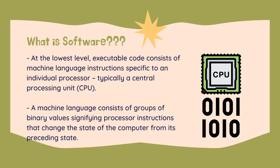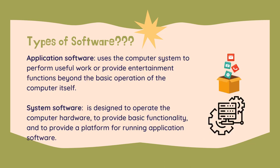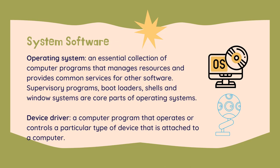The processor carries out the instructions in the order they are provided, unless it is instructed to jump to a different instruction or interrupted. Application software uses the computer system to perform useful work or provide entertainment functions beyond the basic operation of the computer itself. System software is designed to operate the computer hardware, to provide basic functionality, and to provide a platform for running application software. System software includes the operating system, an essential collection of computer programs that manages resources and provides common services for other software.